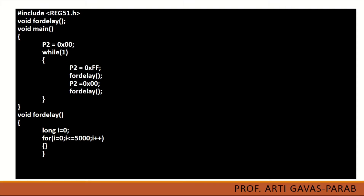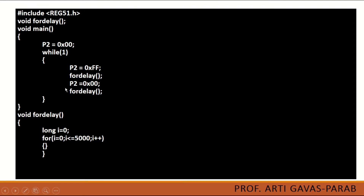Here is the embedded C code required to generate a square wave. The first statement is to include registry51.h, which will add all the necessary library files required to execute your program. The next is a function prototype for a delay function. This void delay is a user defined function to generate a delay — this is the function prototype, this is the function definition, and this is the function call.